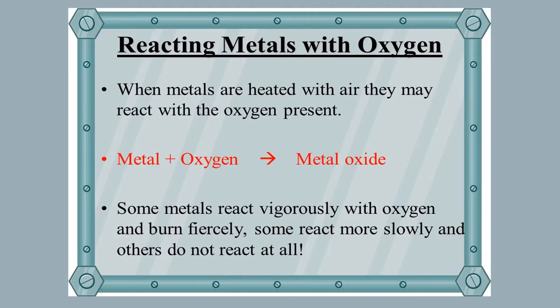The first chemical property that we are going to study is reaction with oxygen. When metals react with oxygen, they form metal oxides which are basic in nature. Some metals react vigorously with oxygen, some moderately, and some slowly. There are some metals which do not react with oxygen at all. The reaction with different substances depends upon the reactivity of metals.